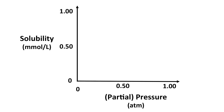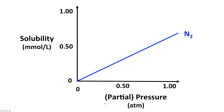If we look at the graph of solubility versus partial pressure for nitrogen gas, it's linear. The solubility is in millimoles per liter and partial pressure in atmospheres. It's a straight line that goes through zero, zero, which indicates direct proportionality, and the slope of this line is the Henry's Law constant for nitrogen.